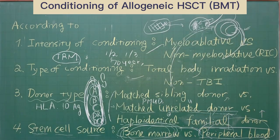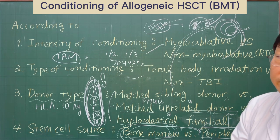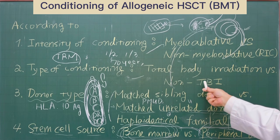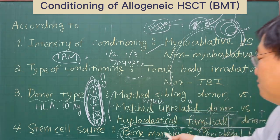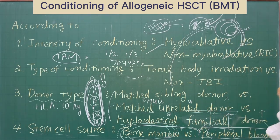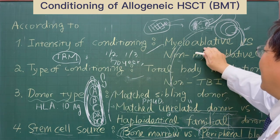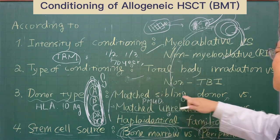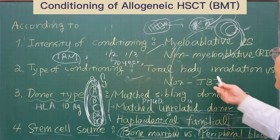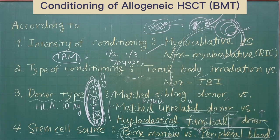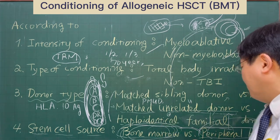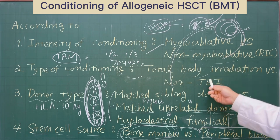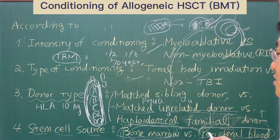When we combine these concepts, we can classify each allogeneic transplantation in various ways. For example, if a patient will receive myeloablative conditioning using non-TBI conditioning from a matched sibling donor with bone marrow stem cells, we can describe this as myeloablative, non-TBI, bone marrow stem cell transplantation from a matched sibling donor. For another example, if a patient will receive non-myeloablative conditioning using total body irradiation from a haploidentical familiar donor using peripheral blood stem cells, we can describe this as non-myeloablative, TBI-based, peripheral blood stem cell transplantation from a haploidentical familiar donor.